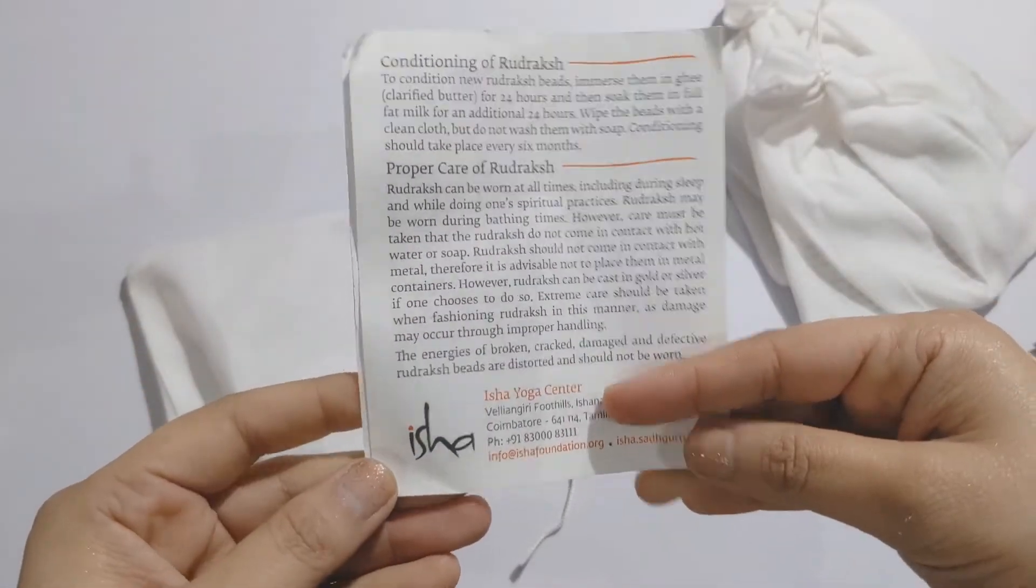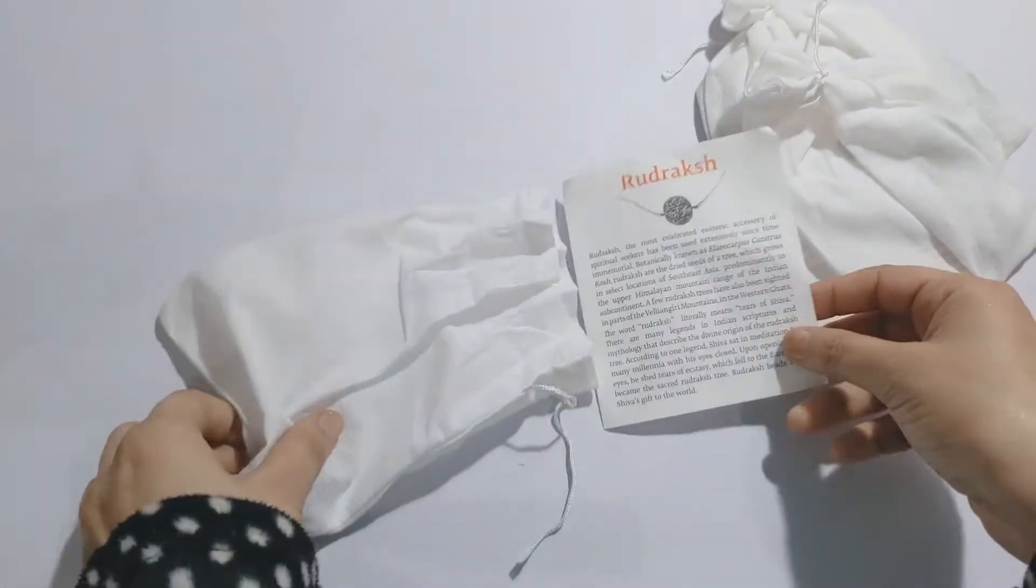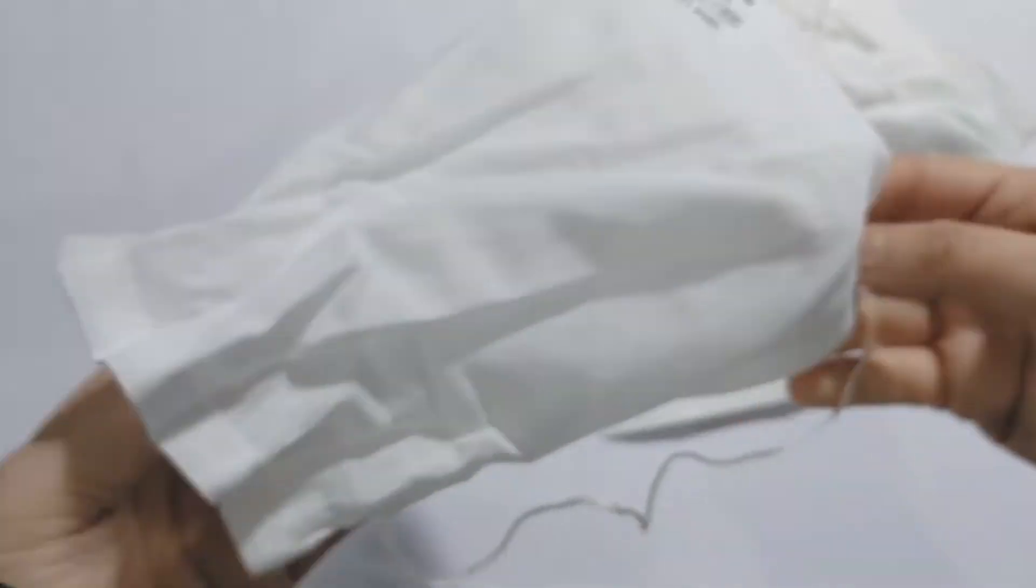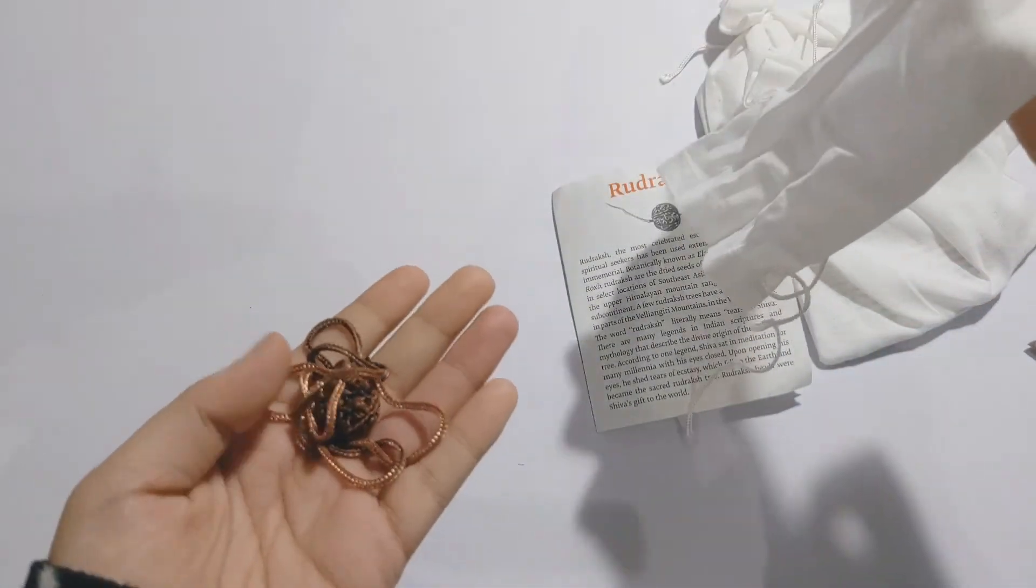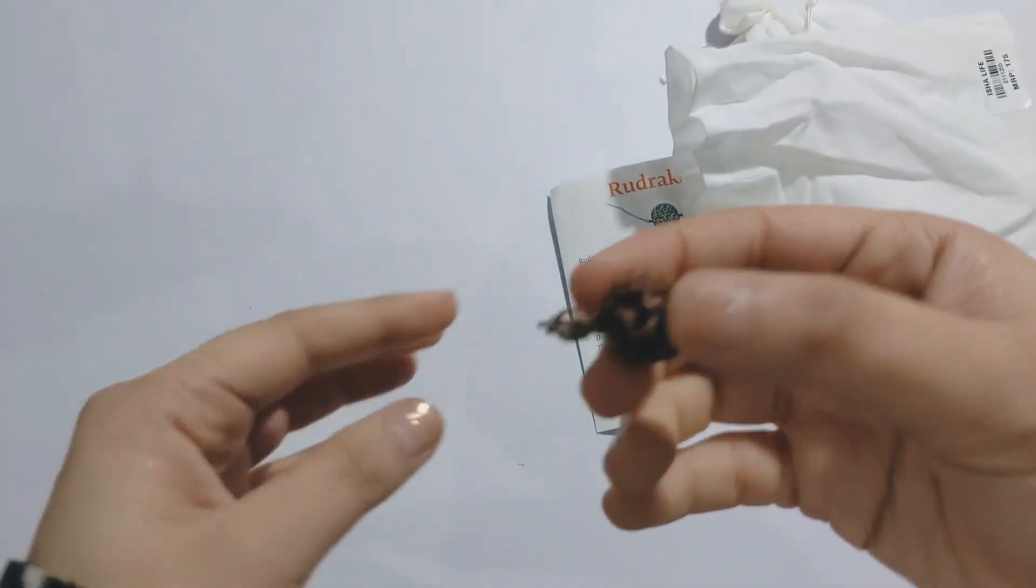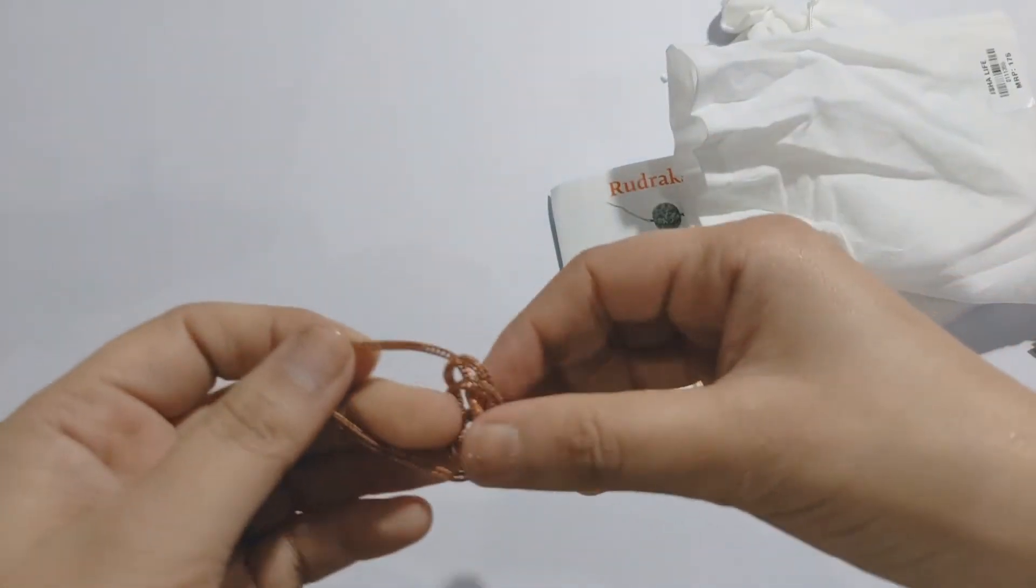Their rudraksha comes with a chain, and the polish was missing from many places, but it doesn't matter because you can also wear it with a thread.